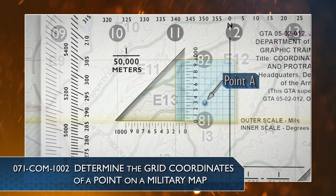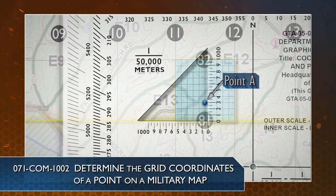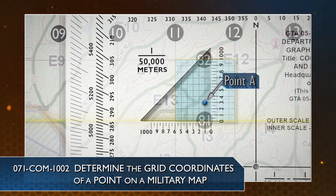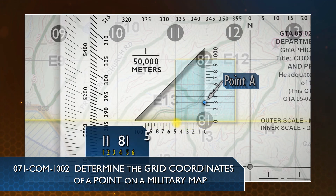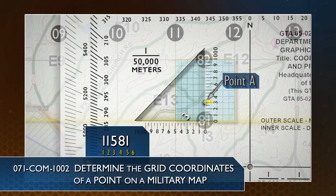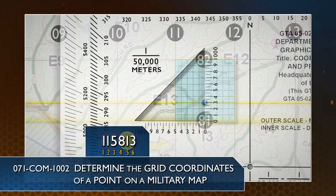The six-digit grid coordinates of your location can be determined by using a coordinate scale and protractor, a plotting scale, or by visualizing a 10 by 10 grid box inside the appropriate grid square. For a full explanation of this procedure, refer to task: Determine the Grid Coordinates of a Point on a Military Map.